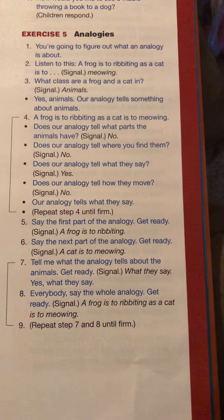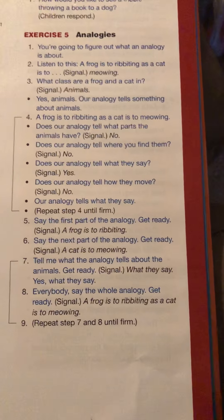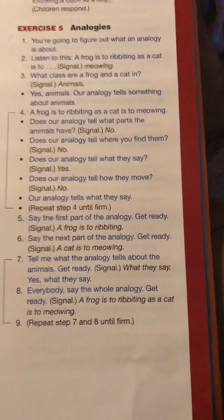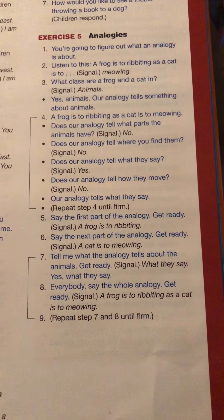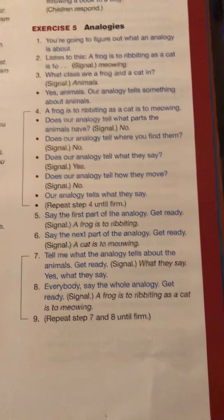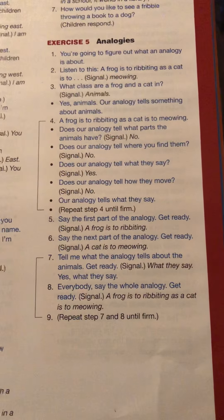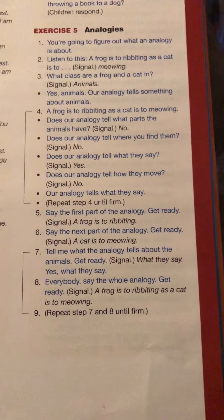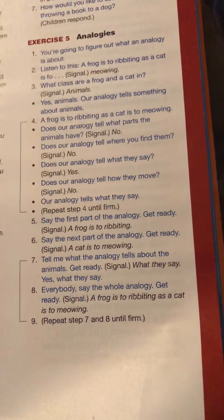Say the first part of the analogy. Get ready. A frog is to ribbiting. Now say the next part of the analogy. Get ready. A cat is to meowing. That concludes our lesson for today.